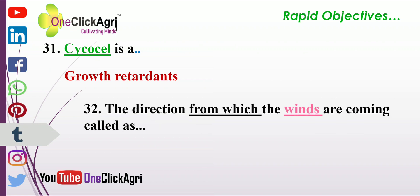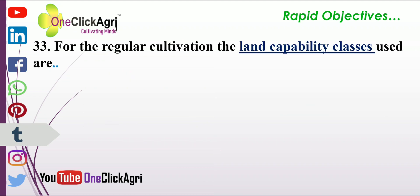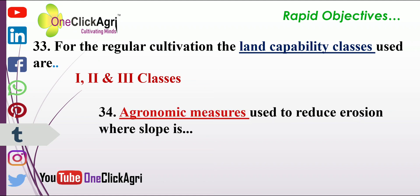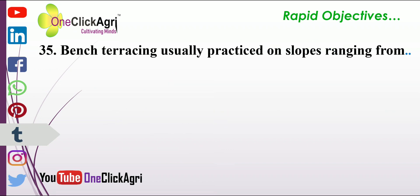The direction from which the winds are coming is called the windward side. For regular cultivation, the land capability classes used are 1st, 2nd, and 3rd classes. Agronomic measures are used to reduce erosion where slope is less than 2 percent. Bench terracing is usually practiced on slopes ranging from 16 to 33 percent.